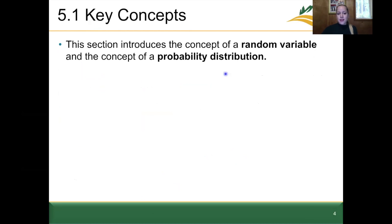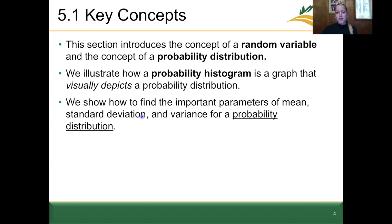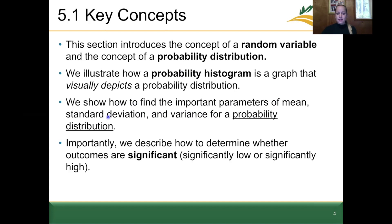The key concepts in 5.1 include some definitions: the concept of a random variable and the concept of a probability distribution. We're also going to illustrate a probability histogram, which is a graph that visually depicts a probability distribution. From that distribution, we'll learn how to calculate the mean, the variance, and the standard deviation. We'll also go through how to determine whether outcomes are significantly low or significantly high.